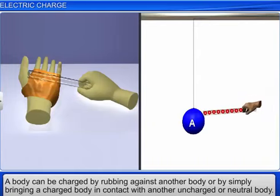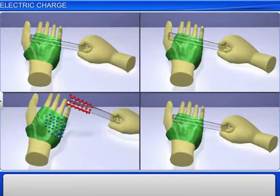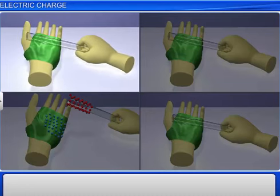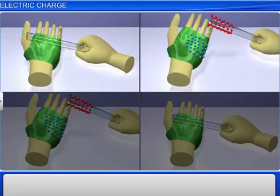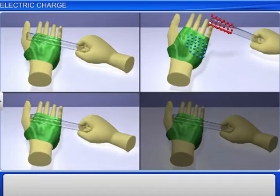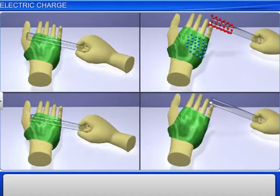When the glass rod and silk cloth were first rubbed, they get electrified. But when they are brought in contact again and separated, they lose their electrification or charge and are neutralized.